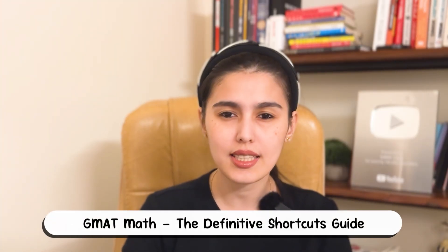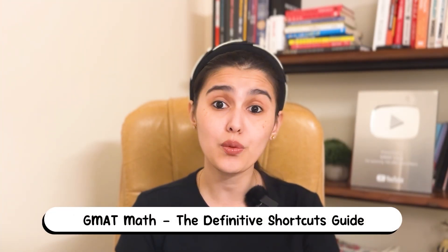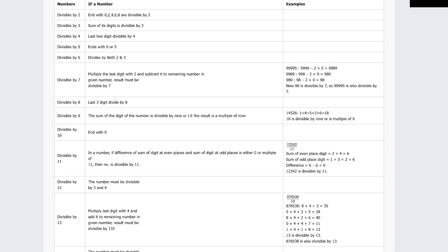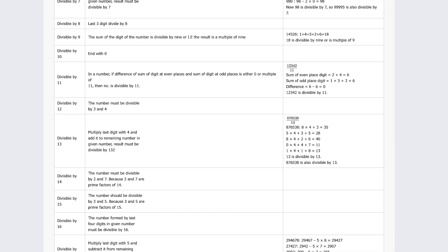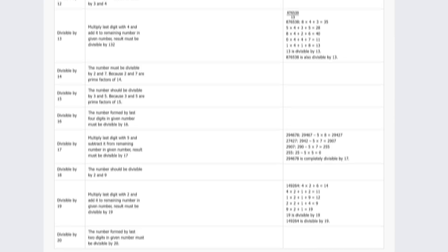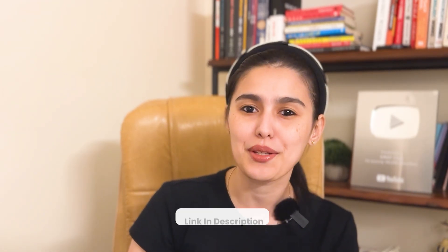Timing is one of the biggest killers on GMAT Quant, and that's where shortcuts can make the difference. GMAT Club moderator Carcass has compiled the ultimate shortcuts guide — not random tricks, but the time savers you'll actually use on test day. You'll find methods for fast two-digit multiplication, divisor counts, prime checks, remainder rules, and classic sum formulas. Pair these with a solid theory base and you'll shave precious minutes off the clock. Carcass' full guide is linked below.